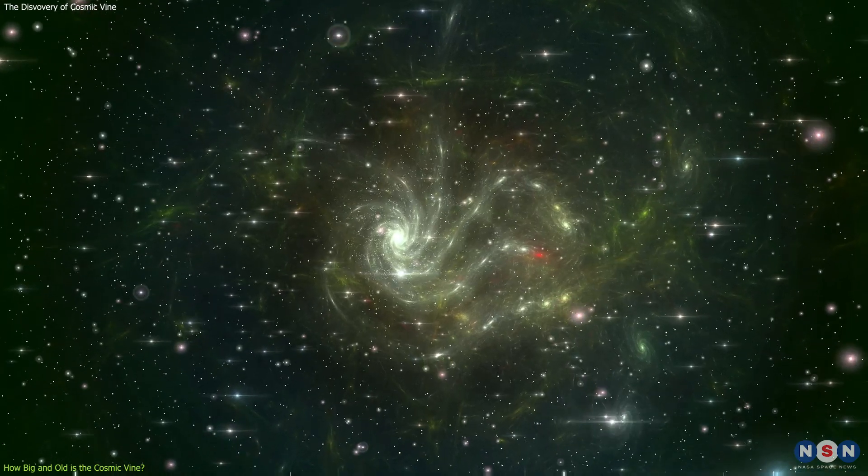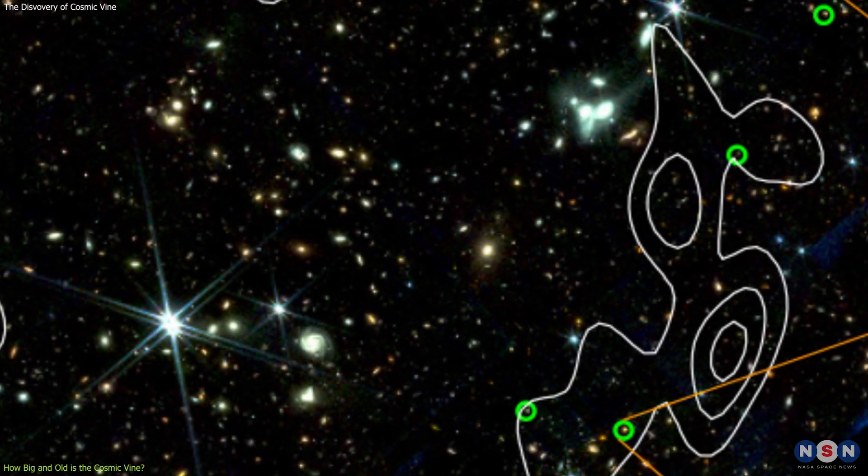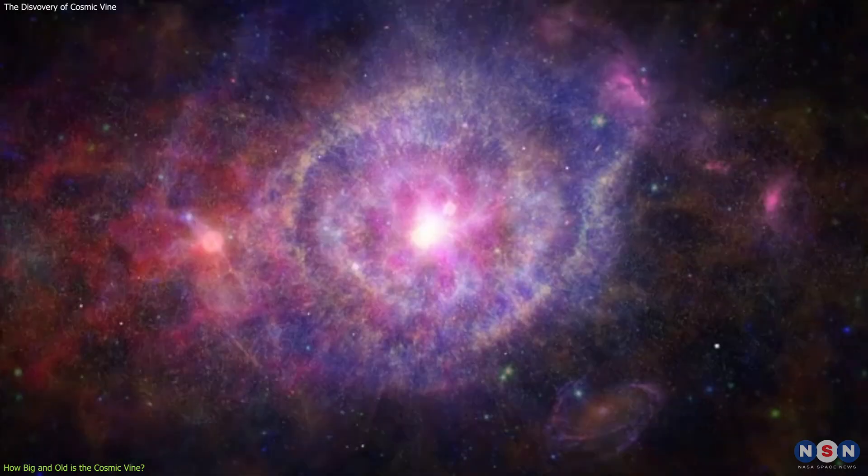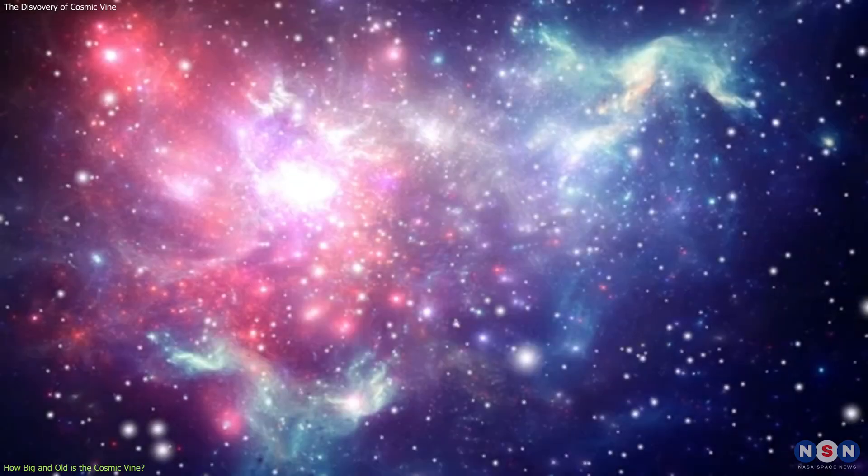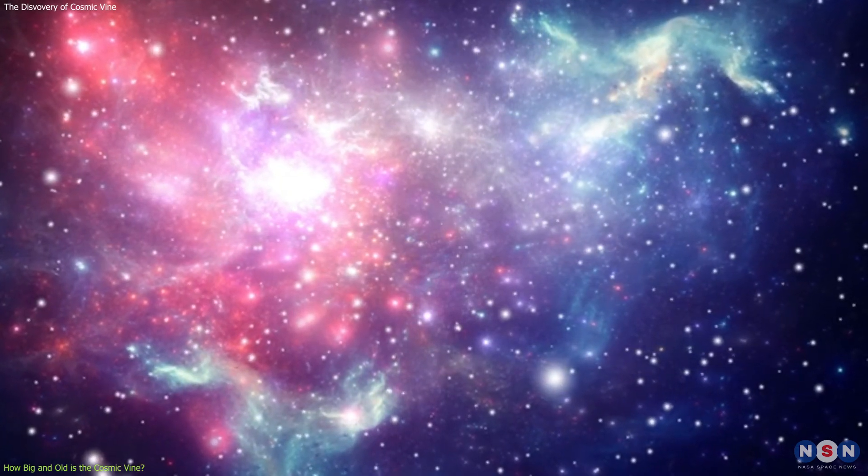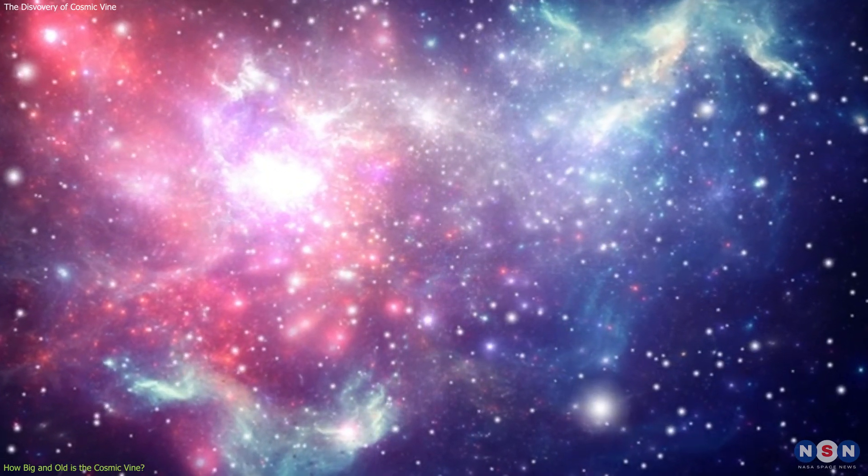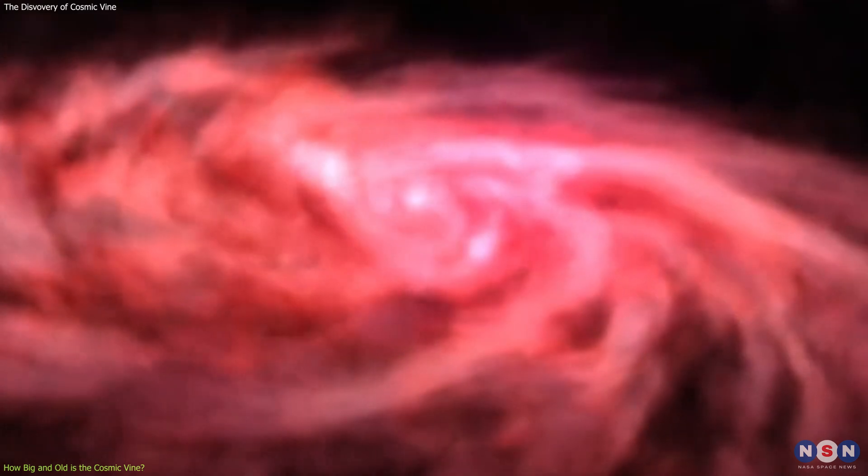They found that it consists of a cluster of galaxies, which are the bright spots in the image, and a filament of gas and dust, which is the faint bridge that connects them. The filament is mostly made of hydrogen gas, which is the most abundant element in the universe, and which is the fuel for star formation.